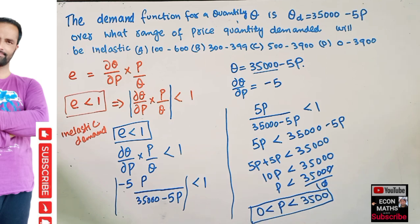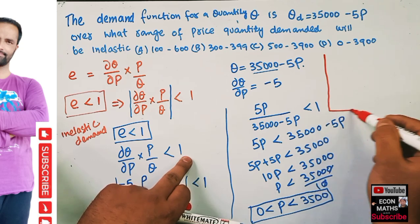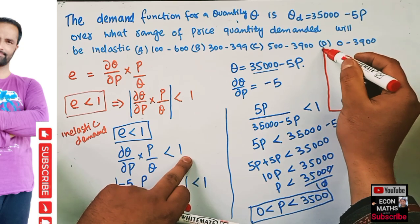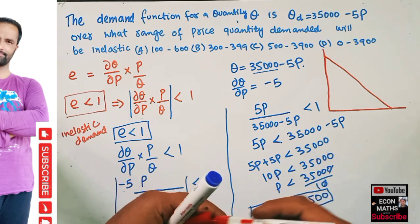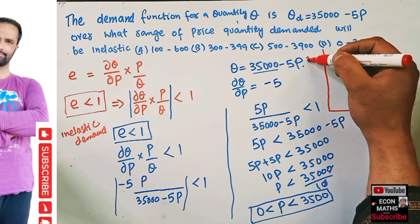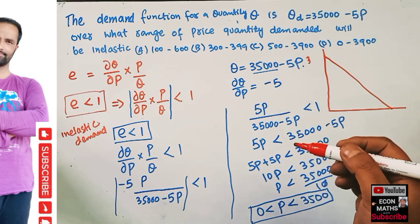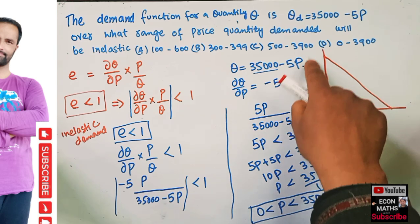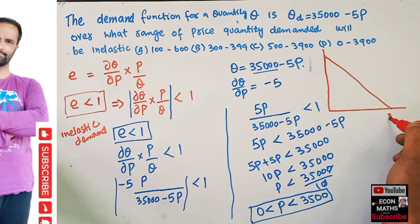So quantity demanded is inelastic when price is between 0 and 3,500. On the graph, as I have explained the elasticity along a demand curve: if this is our demand function, when P equals 0, Q equals 35,000. The intercept is at 35,000.